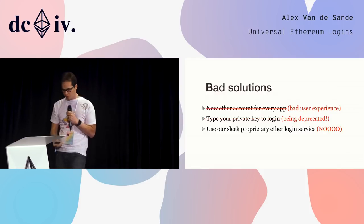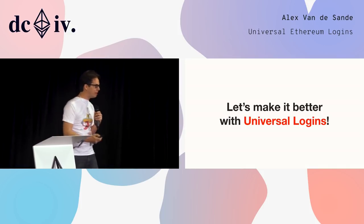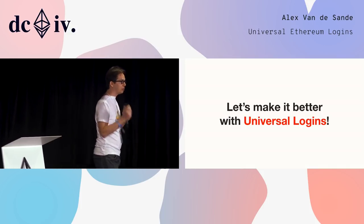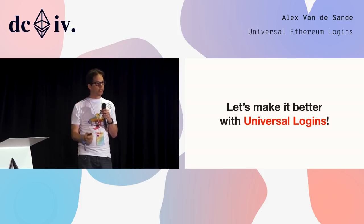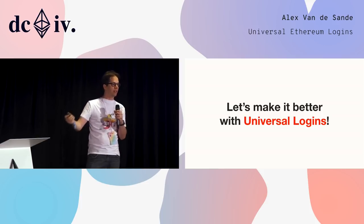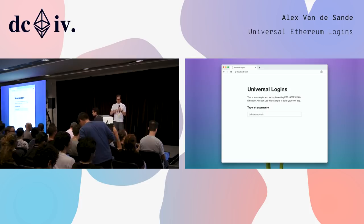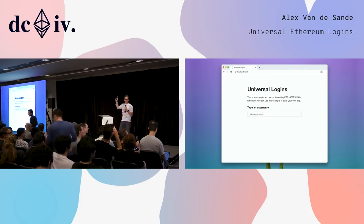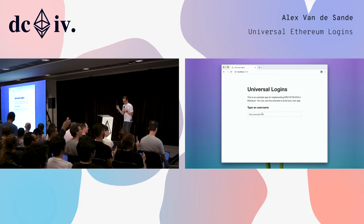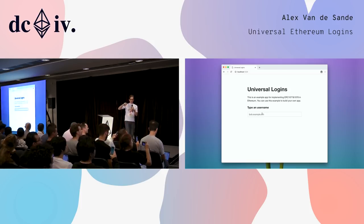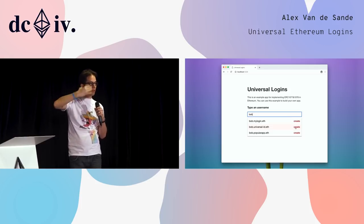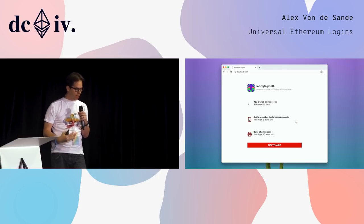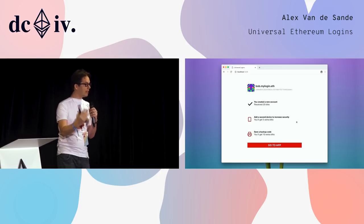I think we can do better, and how is with this thing I'm calling universal logins. It's not a single service or a single website — it's an architecture that I hope many apps can introduce. This is all live code running. The idea is just a website where you click and type your name. That's all you need to do. I even show you multiple usernames you can pick, sort of like picking multiple emails. When you do, you're logged in.